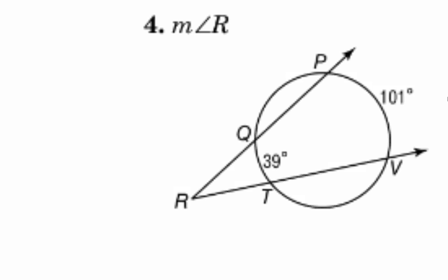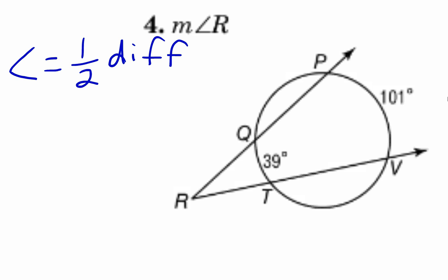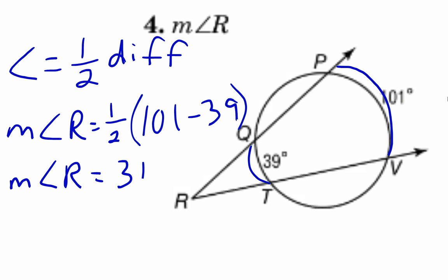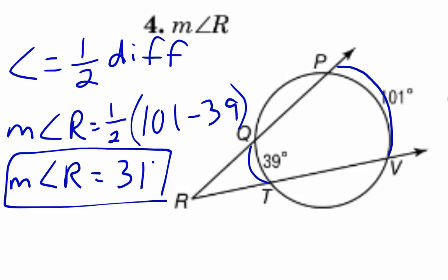On number four, the intersection is outside the circle, so the angle is half of the difference of the arcs. The measure of angle R is half the difference: half of 101 minus 39, which is half of 62, which is 31 degrees. When the intersection is outside the circle, the angle is half the difference.